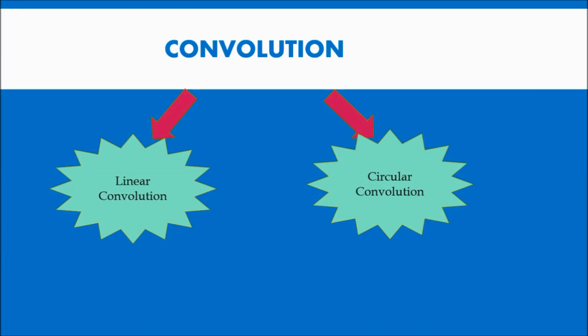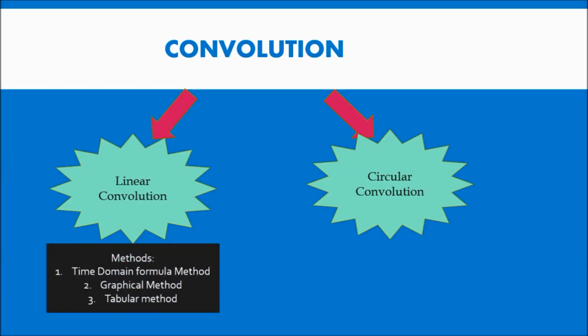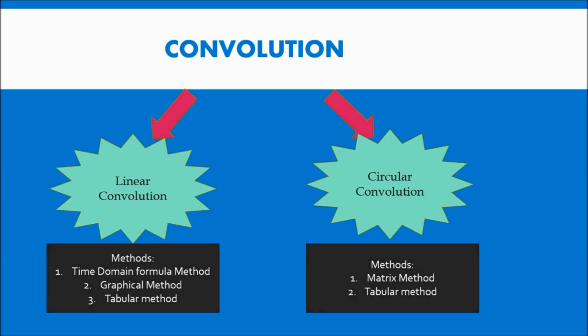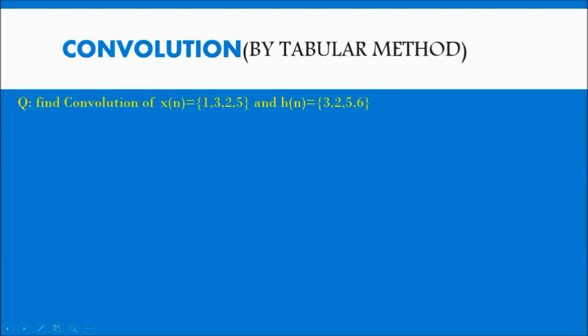Linear convolution can be calculated using time domain formula method, graphical method, and tabular method. Circular convolution can be calculated using matrix method and tabular method. Here we will calculate the convolution using tabular method.